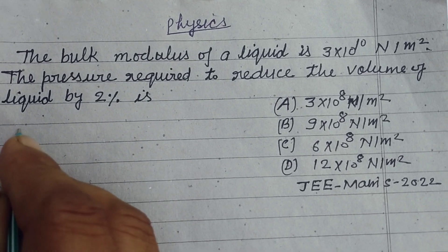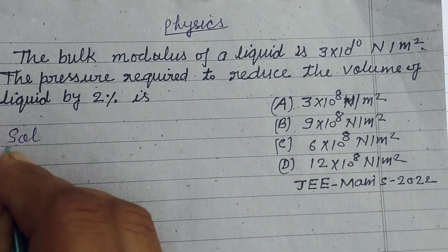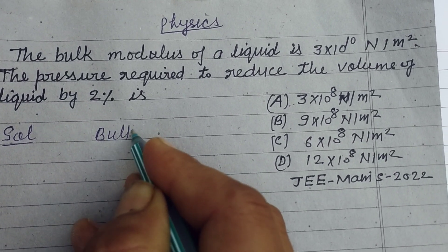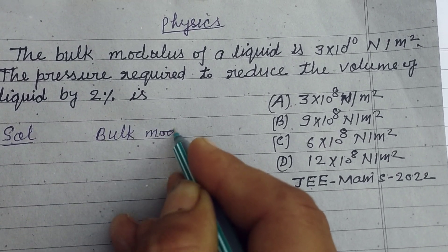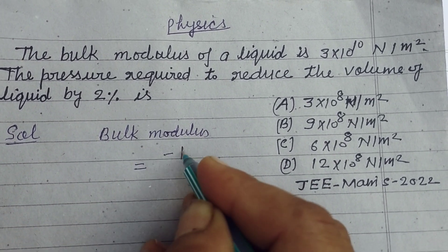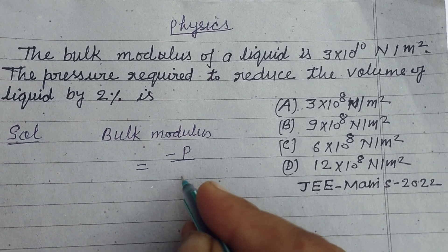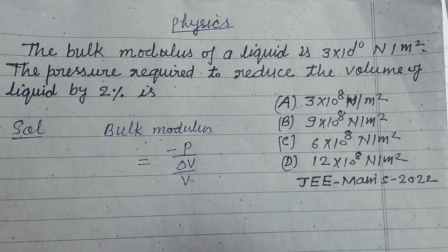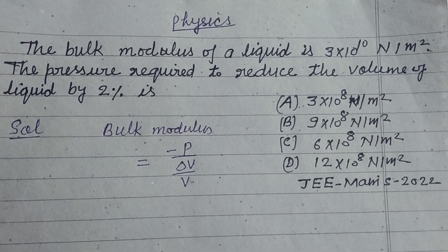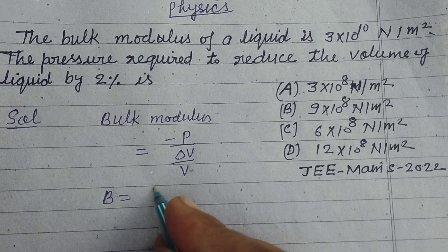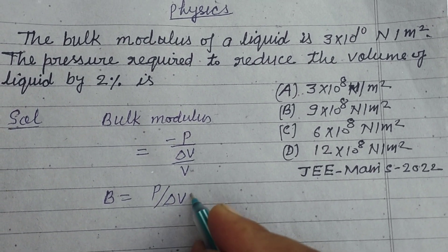So student, first we know the formula for bulk modulus. Bulk modulus equals pressure upon volumetric strain, so B = P/(ΔV/V).